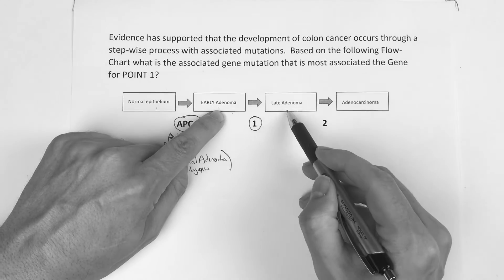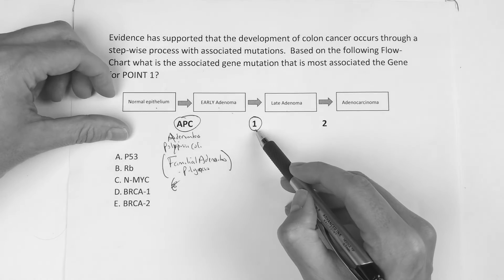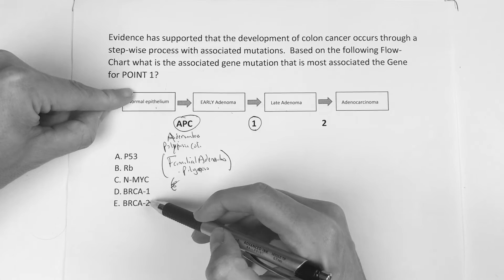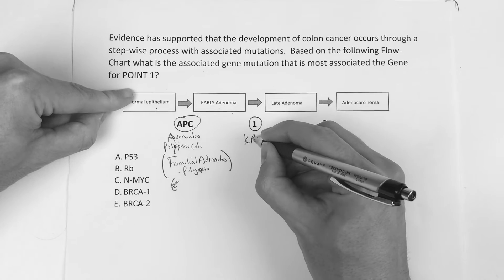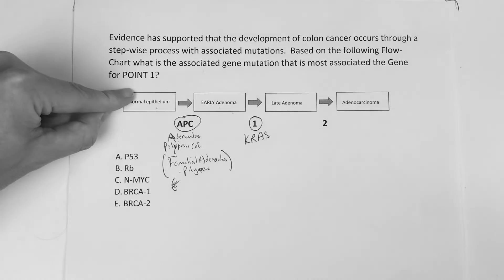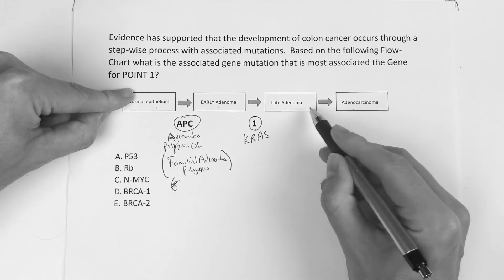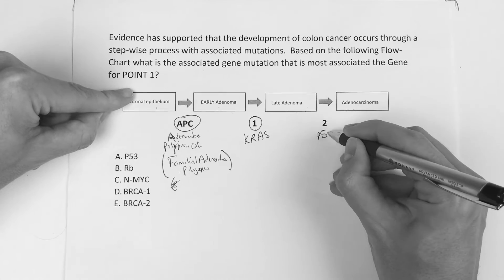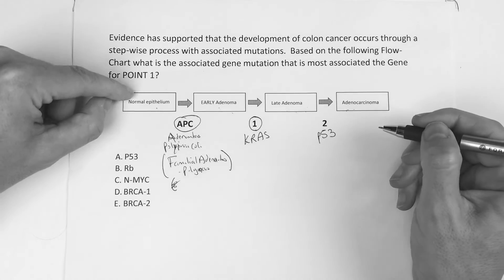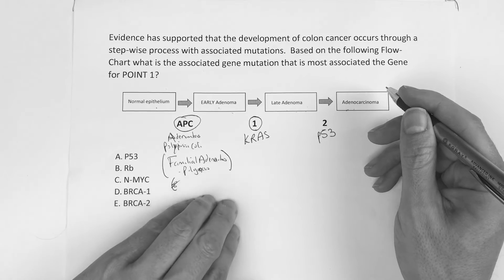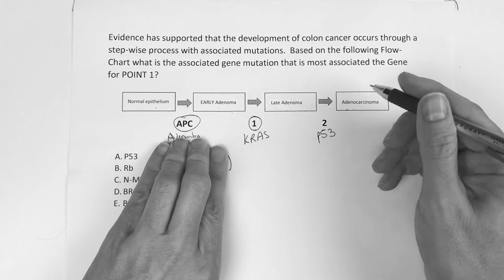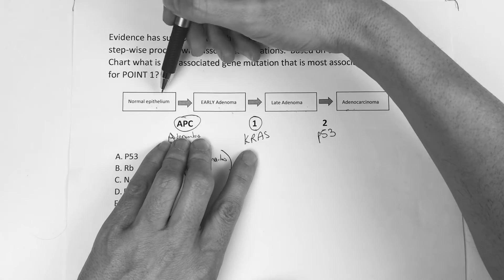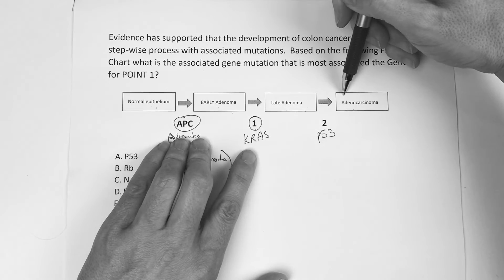To go from early adenoma to late adenoma — I know what you're thinking — by memory you know that's KRAS. And then from late adenoma to adenocarcinoma, that's the bad progression — that's P53. So worst case scenario, the progression question is: do you know APC to KRAS to P53 as you go from normal epithelium all the way to adenocarcinoma?